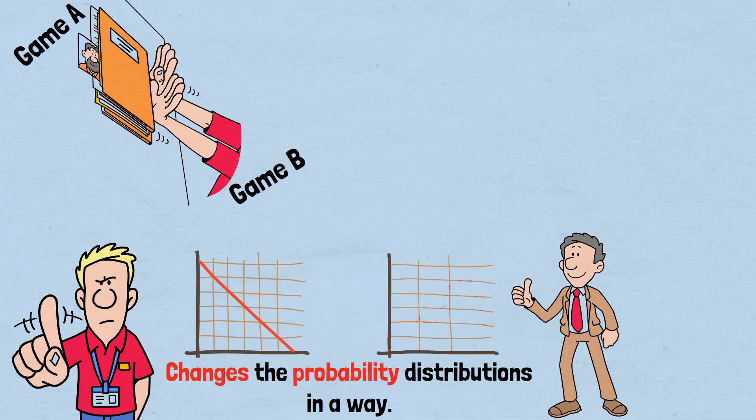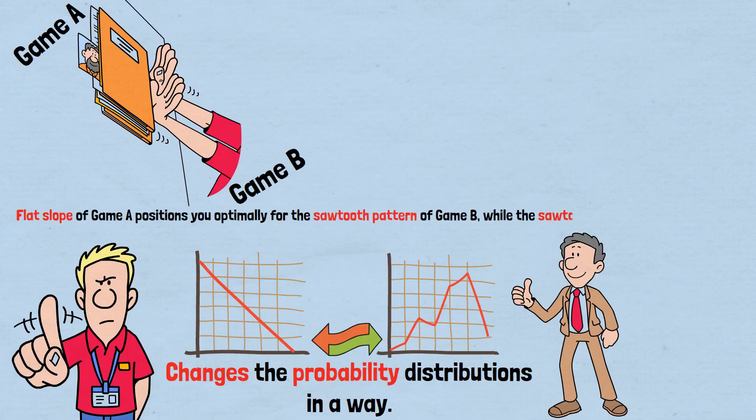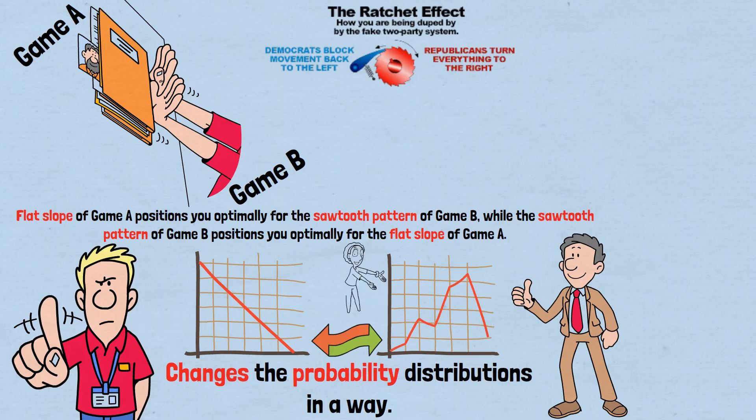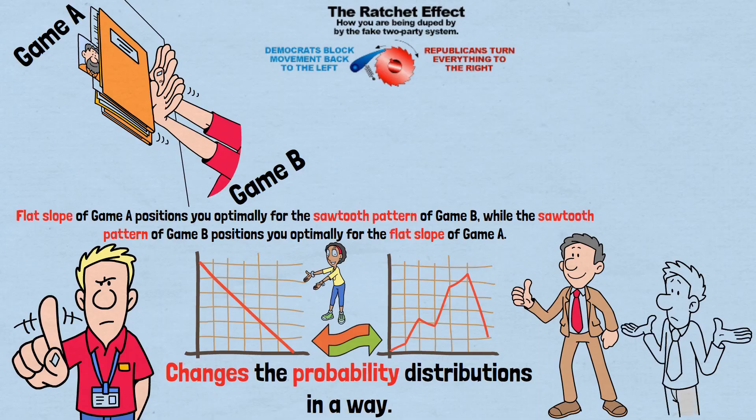Think of it like this: Game A is like a flat, slightly downward slope. Game B is like a steep sawtooth pattern with dramatic ups and downs. When you combine them by alternating, the flat slope of Game A positions you optimally for the sawtooth pattern of Game B, while the sawtooth pattern of Game B positions you optimally for the flat slope of Game A. This creates what physicists call a ratchet effect—directed motion achieved by alternating between two mechanisms that individually don't produce forward progress.